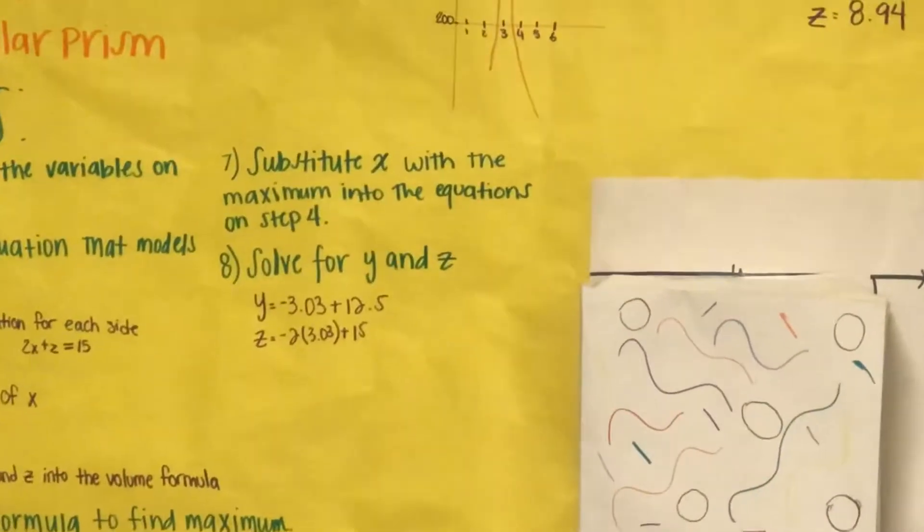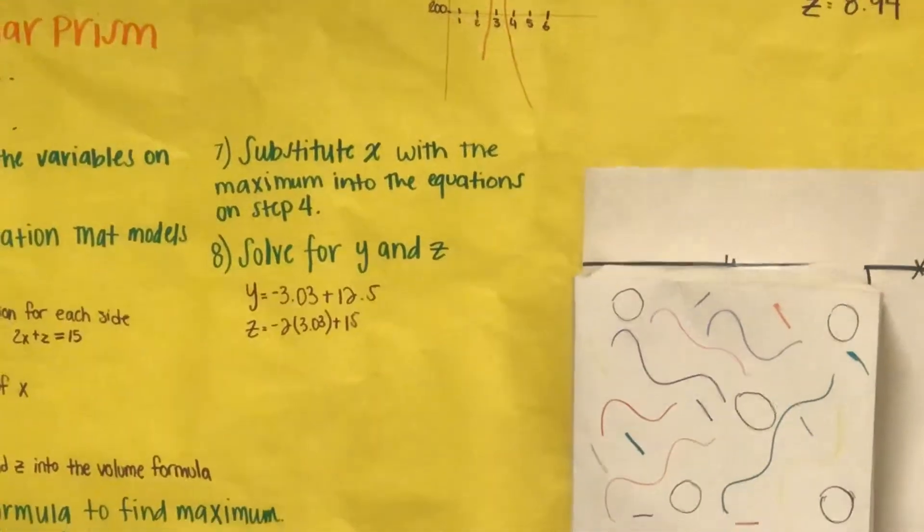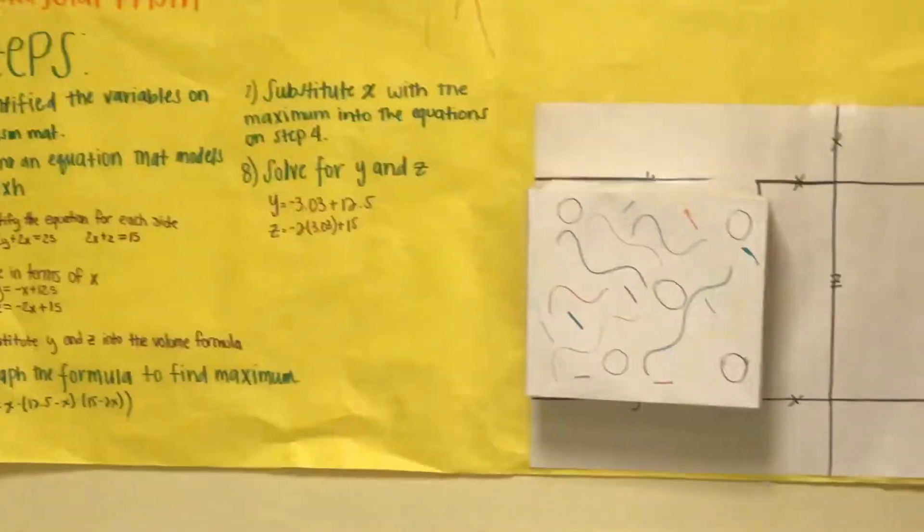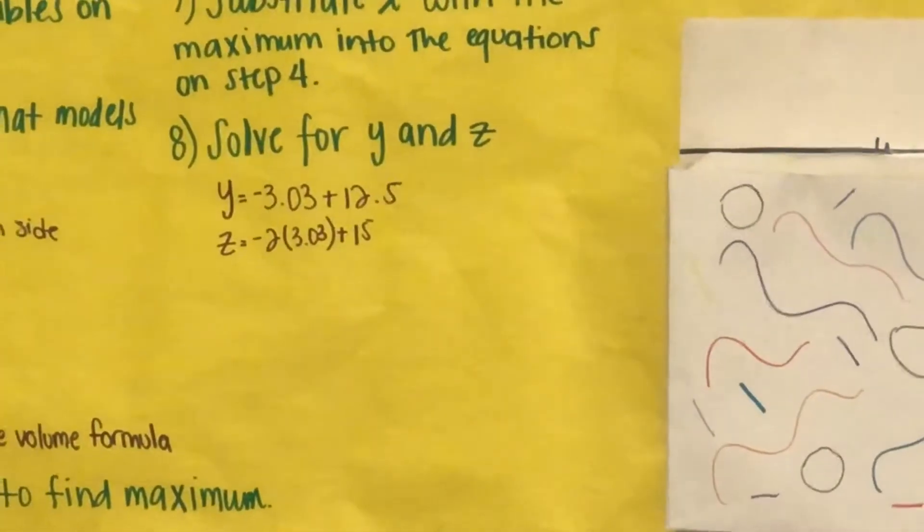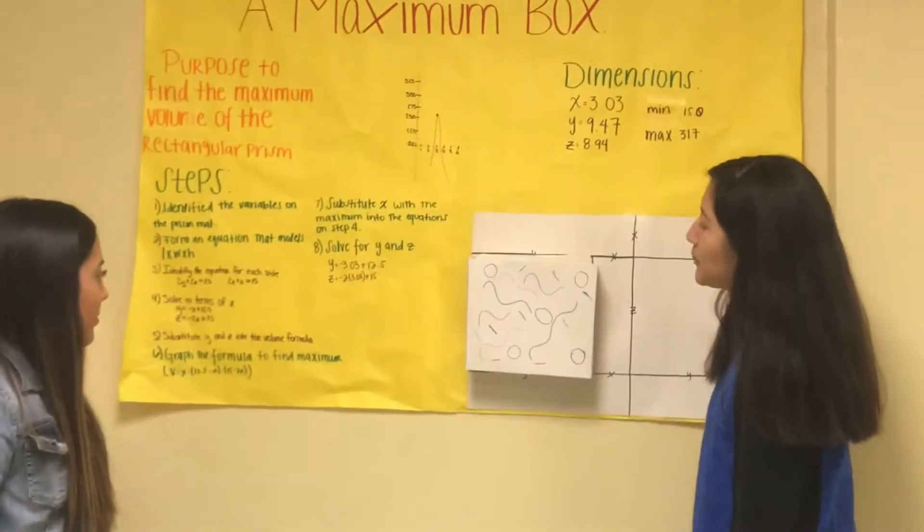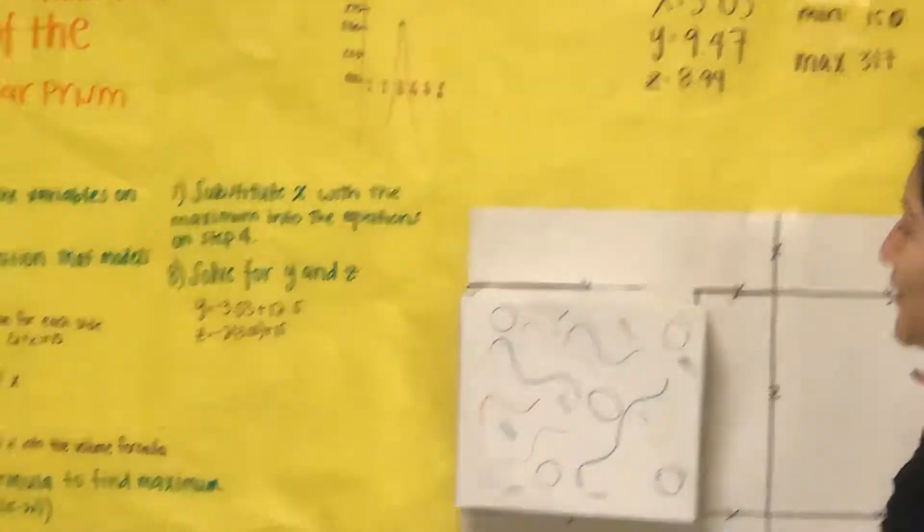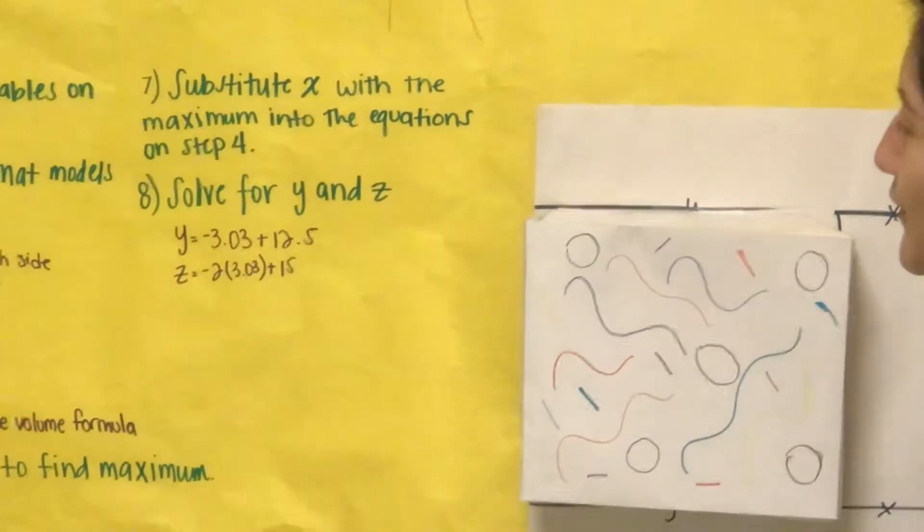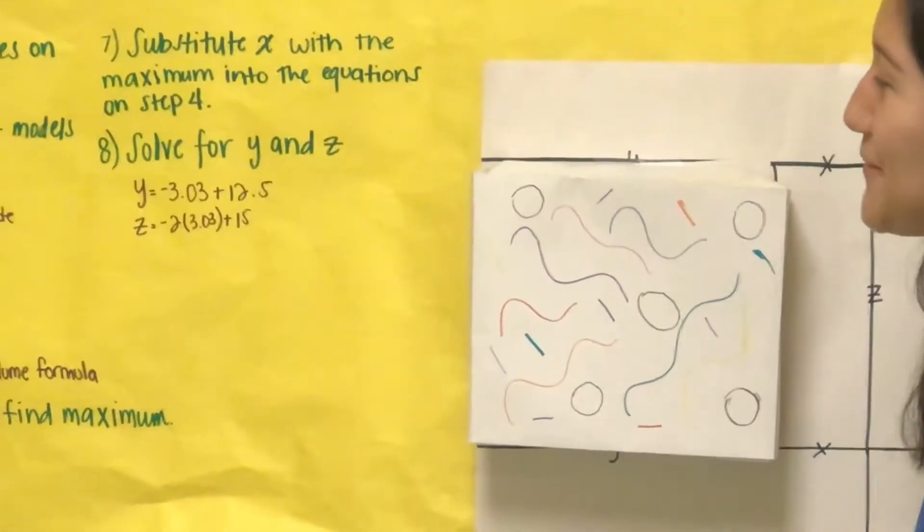Number seven was to substitute x, which is the maximum, into the equations on step four. Step number eight is to solve for y and z: y equals negative 3.03 plus 12.5, z equals negative 2 times 3.03 plus 15.